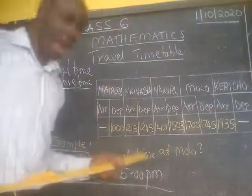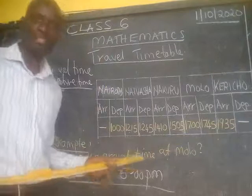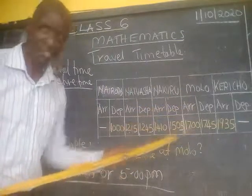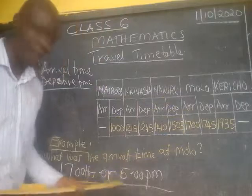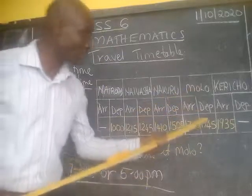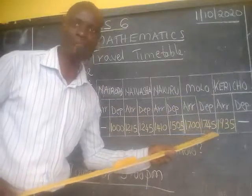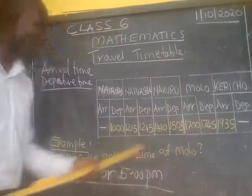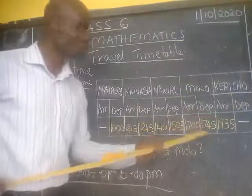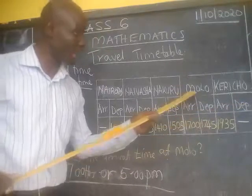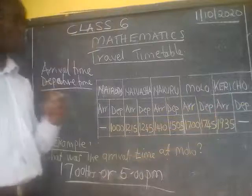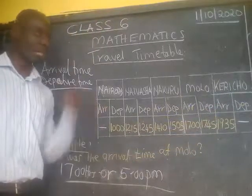If you are asked what was the departure time at Molo, we come to Molo and we have already seen the arrival is 17 hours, or 5 PM. The departure time at Molo is 17 hours 45 — that is the time at which this vehicle left for Kericho. You need to be very careful: check the town, then check the arrival and departure. By doing that it will be very easy for you to calculate and know the times.